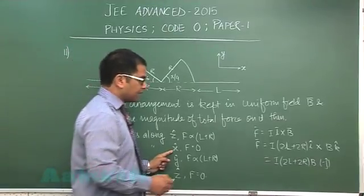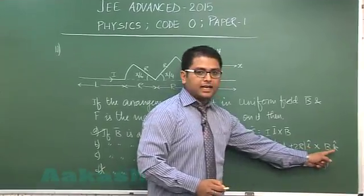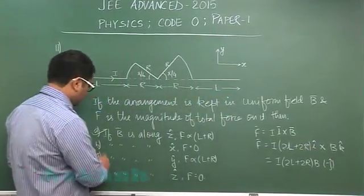If B is along X this also seems correct because if B is along X the cross product of I and I would be 0, so this is also correct.